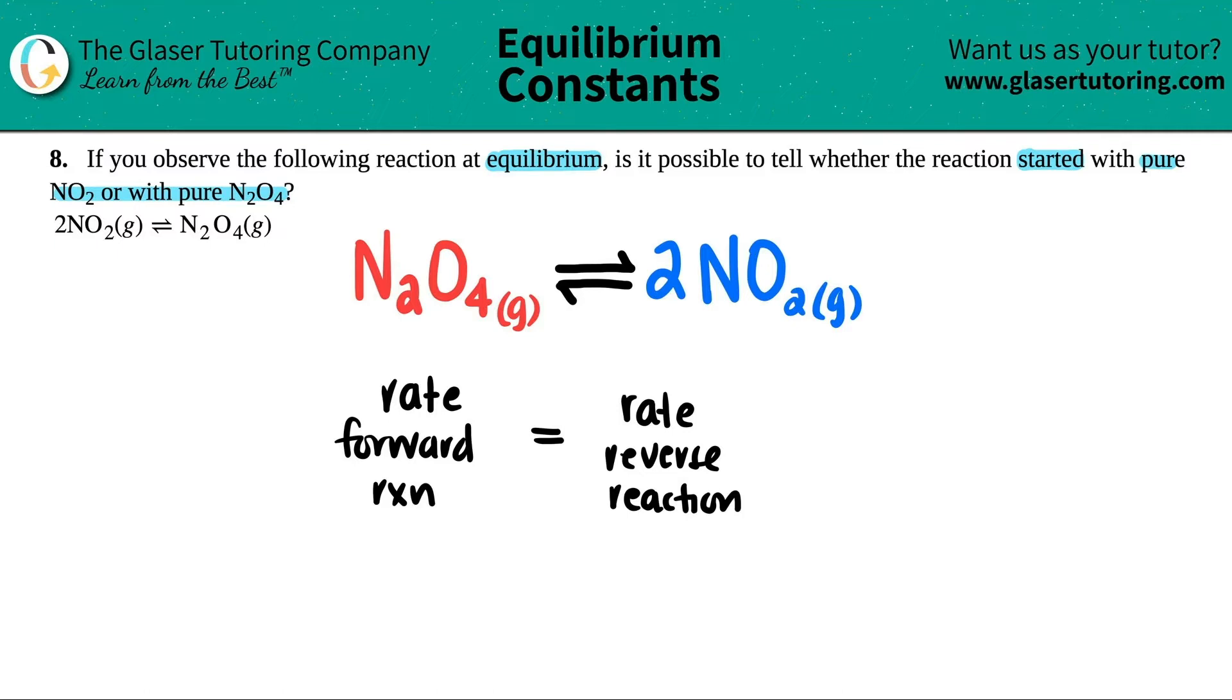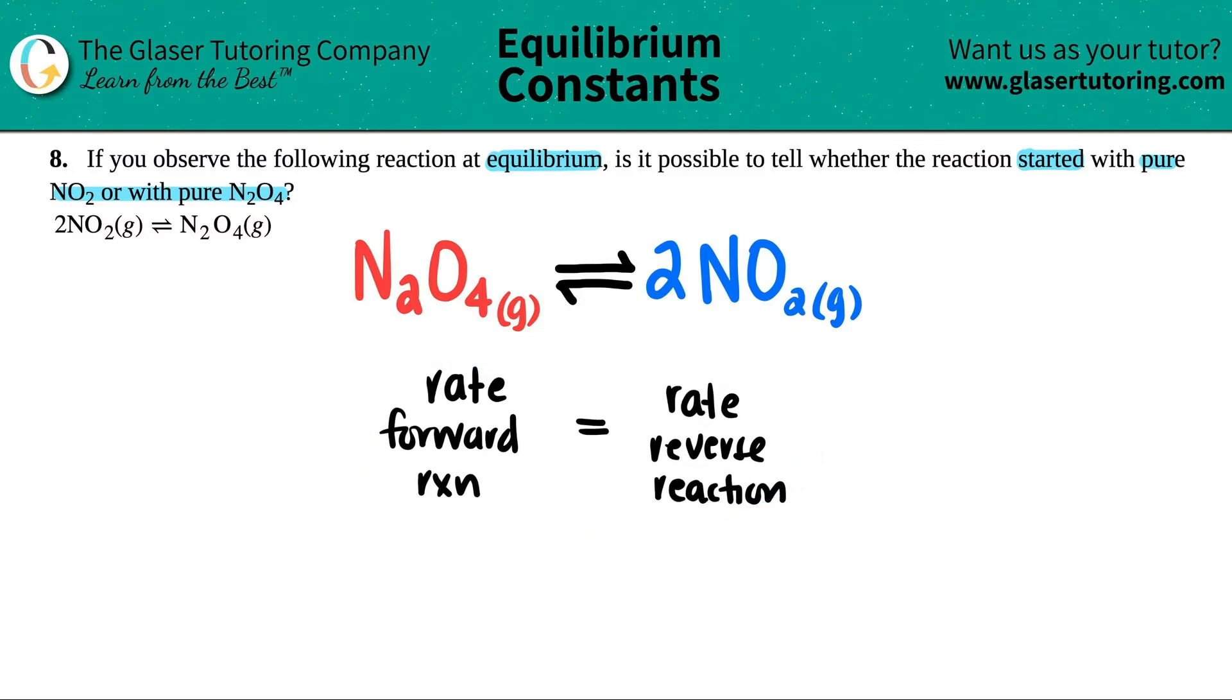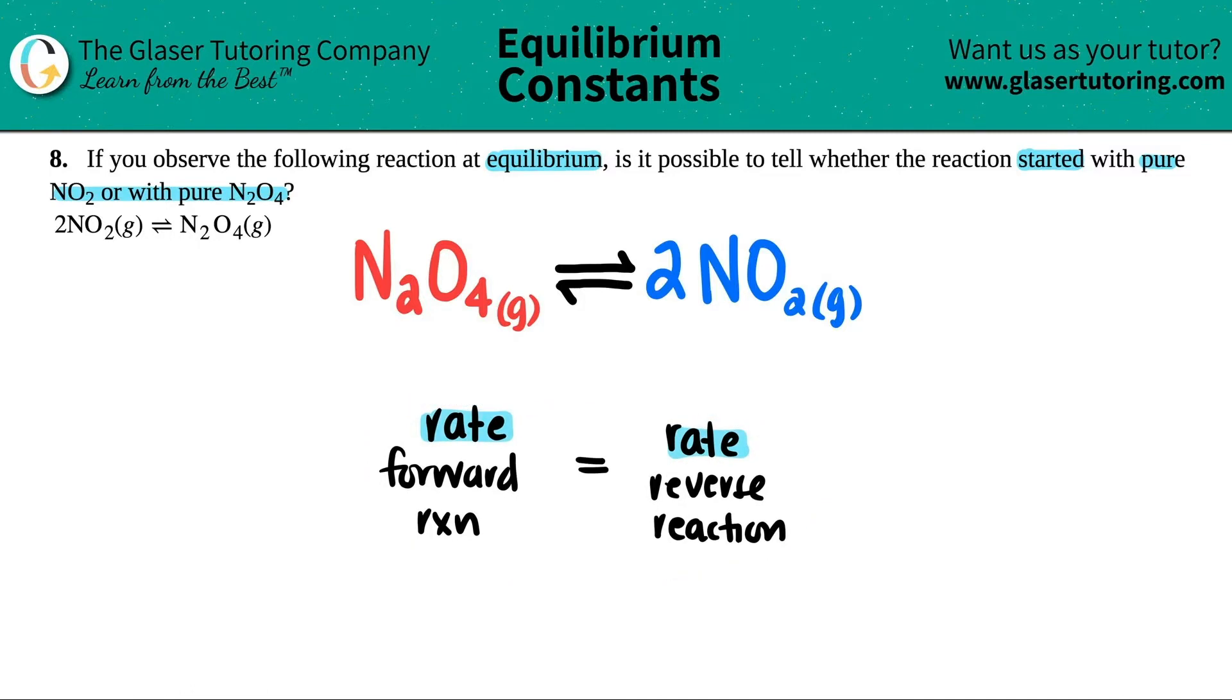So that's what's equal: the rates, meaning how fast the forward reaction is happening. The forward reaction is always going from the reactants to the products as stated. So the forward reaction would be the N2O4 turning into 2NO2.